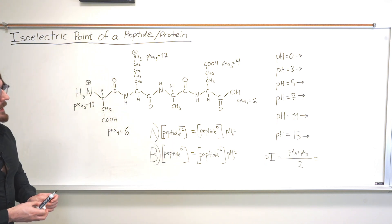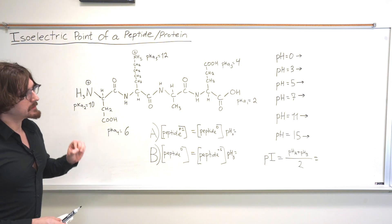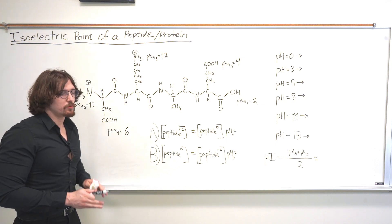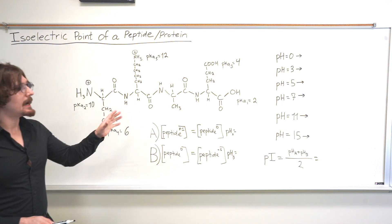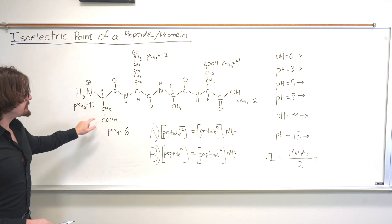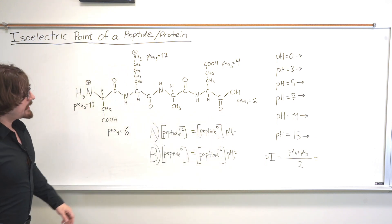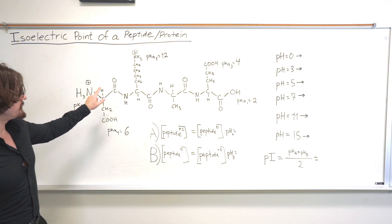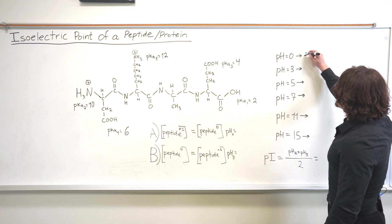Starting at a pH of zero: remember that if the pKa is greater than the pH, that group is protonated, and if the pKa is less than the pH, that group is deprotonated. At pH zero, all pKas are higher than the pH, so all groups are protonated. We have a positive charge at the amino terminal and on the lysine side chain — that gives an overall net charge of +2 at pH zero.